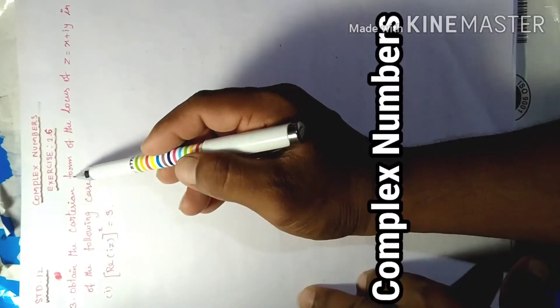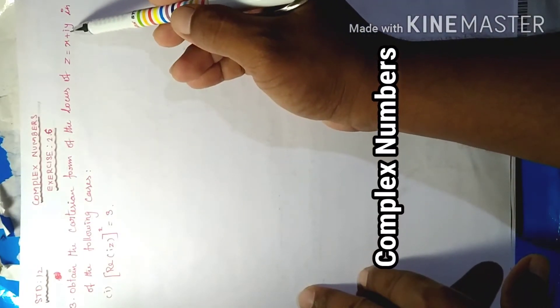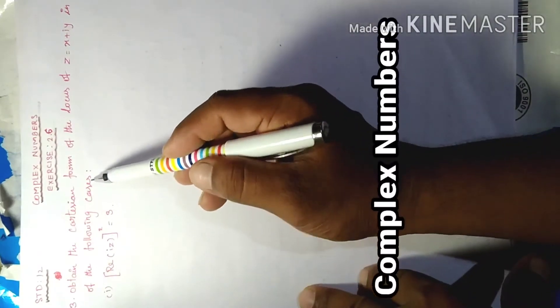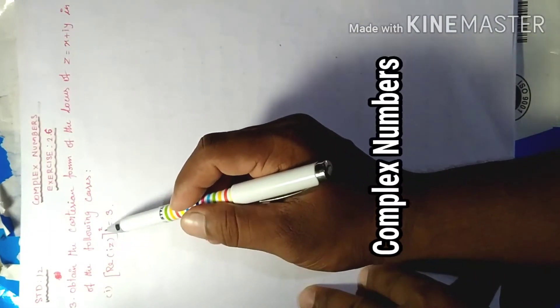Obtain the Cartesian form of the locus z equals x plus iy in each of the following cases. Subdivision 1: Real part of iz whole square equal to 3.